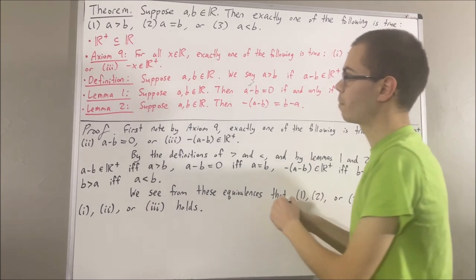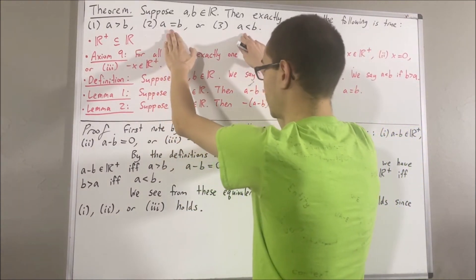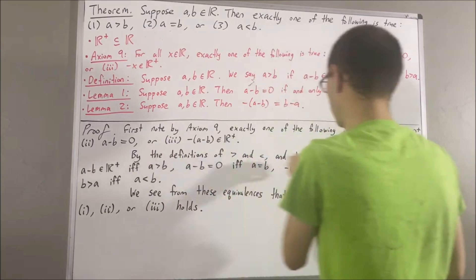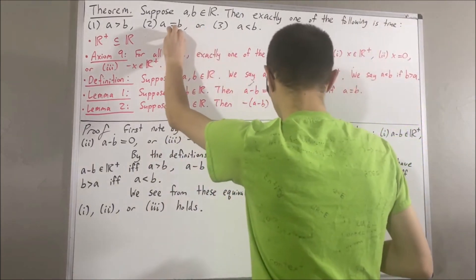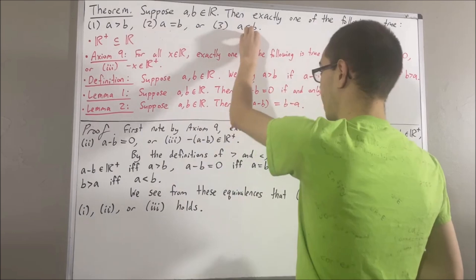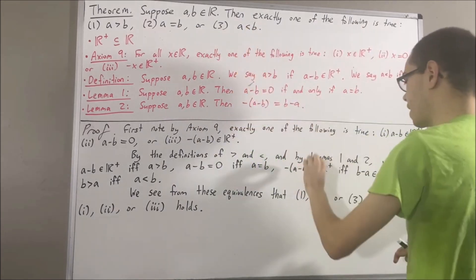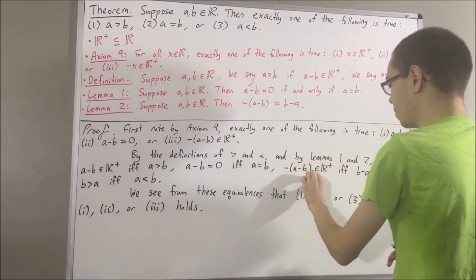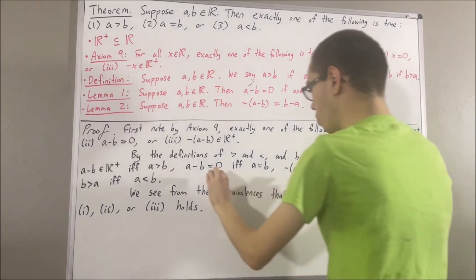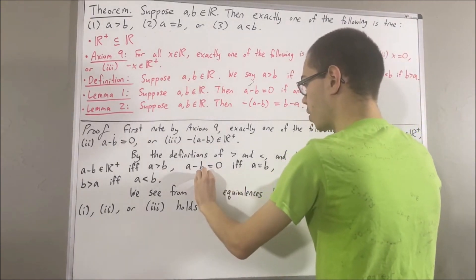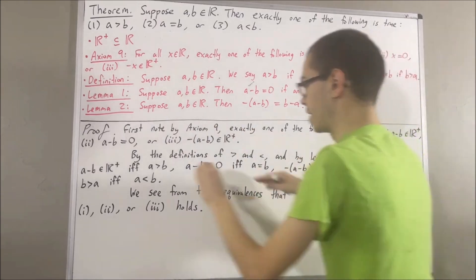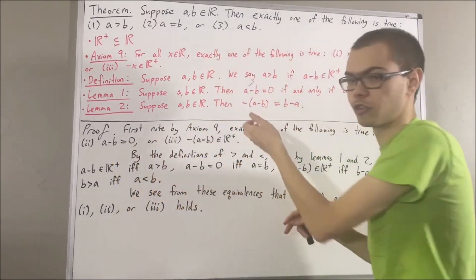What happens if we have a equals b and a is less than b? By our equivalences, since a equals b, we have a minus b equals zero; and since a is less than b, we have the negative of a minus b is a positive number. But according to Axiom 9, it cannot be the case that both of these are true. So we reach a contradiction.